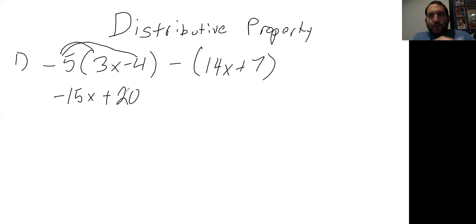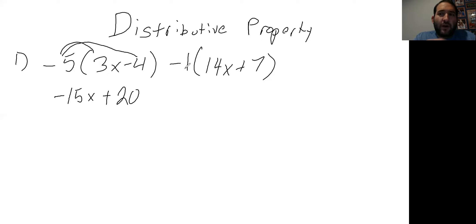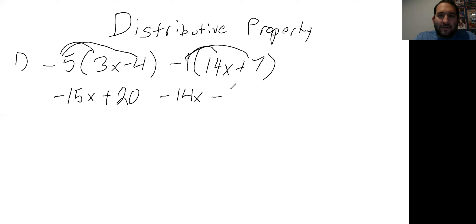Now we look at the second set of parentheses. There's a minus sign in front of it but no number. If there's no number, you can assume we're putting in a 1 — so it's negative 1. Negative 1 distributed to each term: negative 1 times 14x becomes negative 14x, and negative 1 times 7 is negative 7.